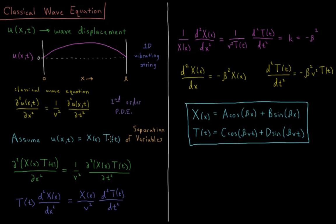So using this separation, let's substitute that into the classical wave equation for u of x here and here. Our function of t does not depend on x, so that can be factored out of this partial derivative. Our function of x does not depend on t, so that can be factored out of this side.